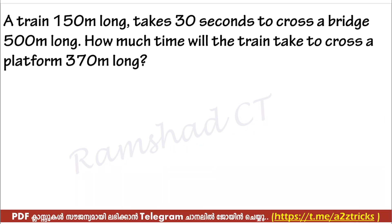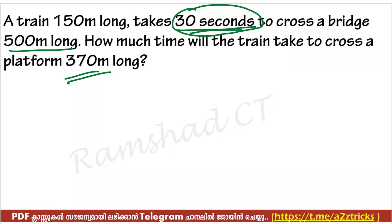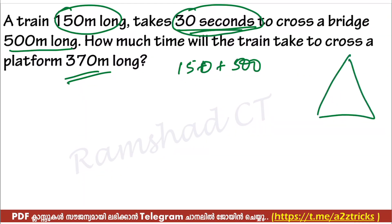How much time will the train take to cross the platform? The platform is 370 meters long, the train is 180 meters long, and one train is 100 meters long. Speed is the distance divided by time.